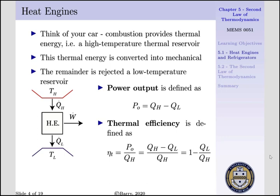From TH, we bring in QH into our heat engine, produce work, and reject the remainder of the heat, QL, to our low temperature reservoir. Our power output, denoted by P₀, sometimes referred to as work W, is the difference of our high temperature heat less our low temperature heat, QH minus QL.